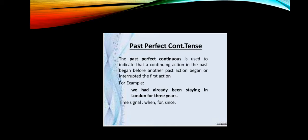Past perfect continuous tense is used to indicate a continuing action in the past that began before another past action started or was interrupted by it. For example: 'We had already been staying in London for three years.'